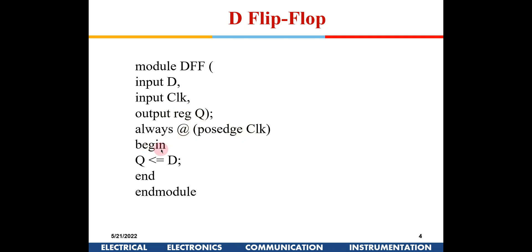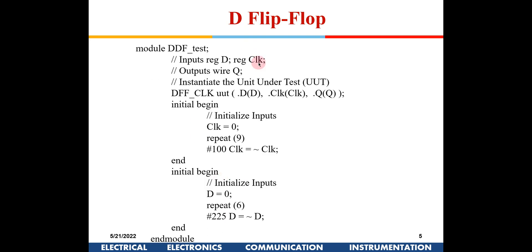Inside the always block we have: begin, Q is assigned the value of D. What this means is: you are making a D flip-flop — whenever the clock makes a positive edge from zero to one, D is captured into Q. At all other times, even when the clock is high and D changes, that will not be reflected at Q. Only during the positive edge of the clock is the value of D captured into Q. This is the Verilog code to implement a D flip-flop.